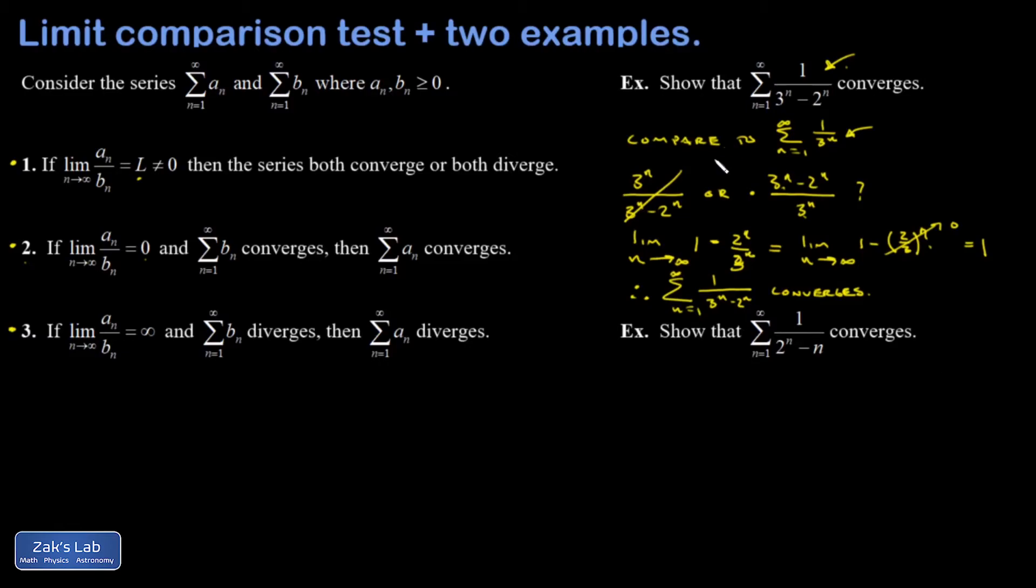In the second example, I have again something that reminds me of a geometric series, like one half to the N, but there's this annoying little correction there. We've subtracted N in the denominator. That makes each of these terms bigger than those of the geometric series. And so there's a legitimate question as to whether or not this is going to converge.